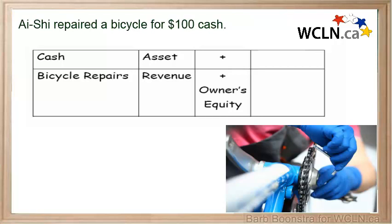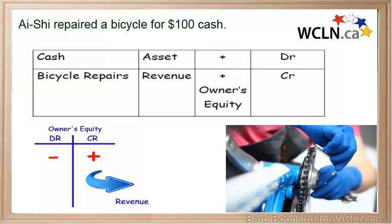Remember that revenue increases as owner's equity increases. Cash increases on the debit side and owner's equity increases on the credit side, which means that revenue will increase on the credit side.